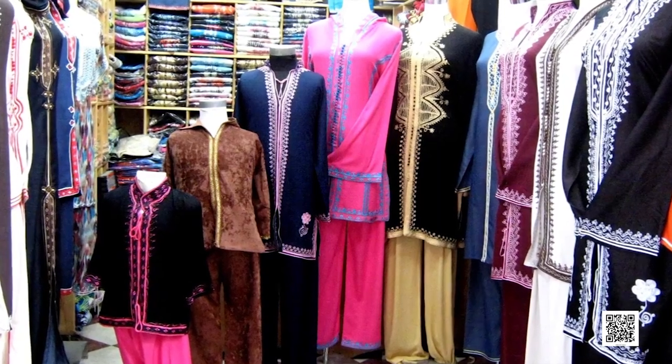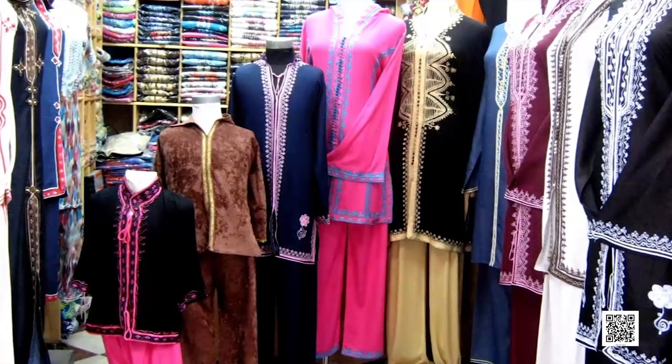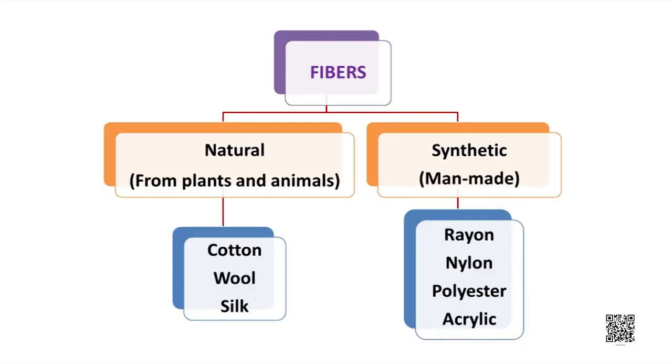Everyone is wearing colorful clothes — do you ever think about the material from which these are made? These cloth materials are made up of natural and artificial fibers, and they are also used for making a large variety of household articles. Based on the source from which it is obtained, fibers can be classified as natural and artificial fibers.